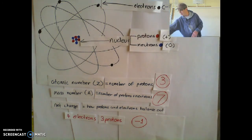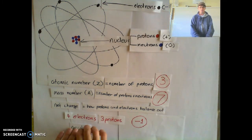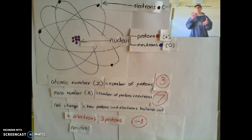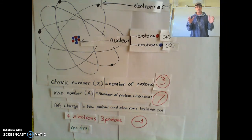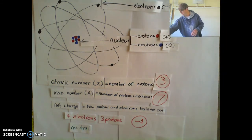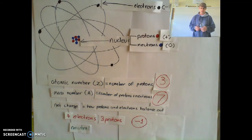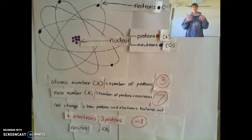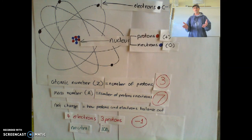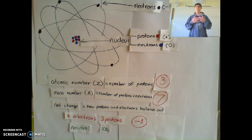A couple more terms we used in this video. Neutral — neutral just means that it doesn't have a charge. There's no plus, there's no minus, it's neutral — it sits in the middle. And our other term was ion — any atom that has a charge, so it has an imbalance of protons and electrons, it's got more of one than the other — any atom that has that, we class as an ion.